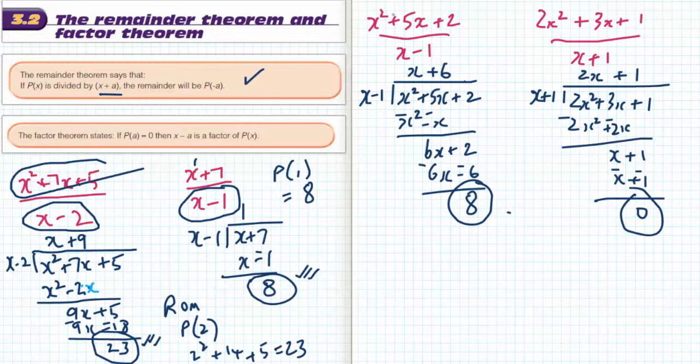In the third case, if I put a 1 wherever x is, I'm going to get 1 squared which is 1 plus 5 plus 2, and I do get a remainder of 8.